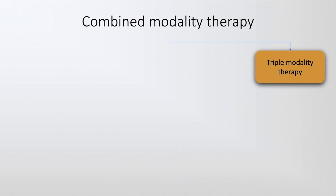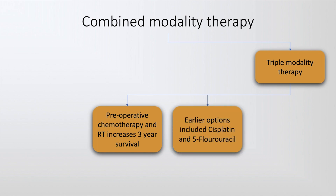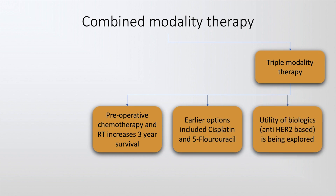Finally, triple modality therapy consists of surgical procedures, chemotherapy, and radiotherapy, which increases survival by up to 3 years. Earlier options, as already discussed, included cisplatin and 5-fluorouracil.